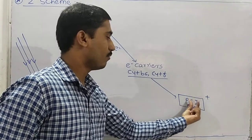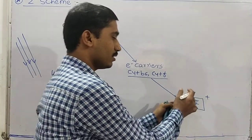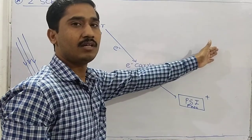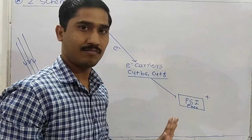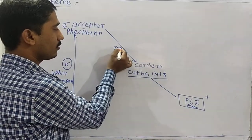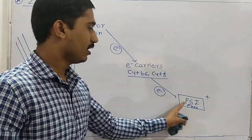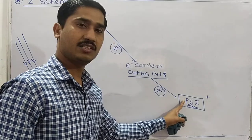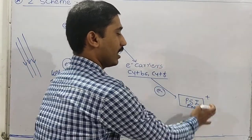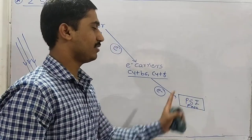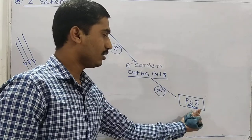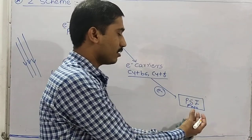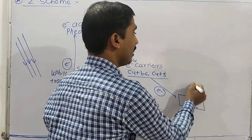The electron repelled from PS I is also accepted by an electron acceptor and forwarded through the electron transport system. The electron arriving from PS II is received by PS I, which returns it to the ground state. After reaching ground state, PS I again receives sunlight of 700 nanometer wavelength and repels another electron.